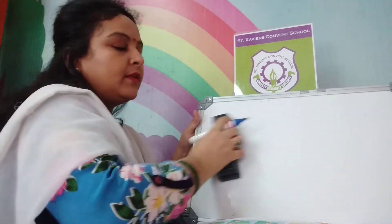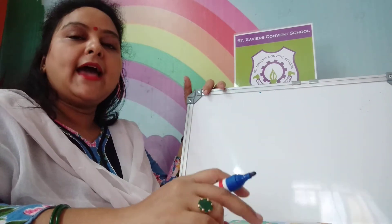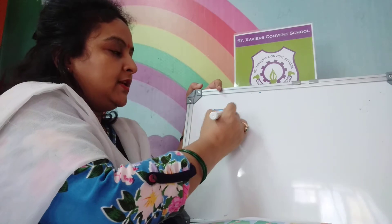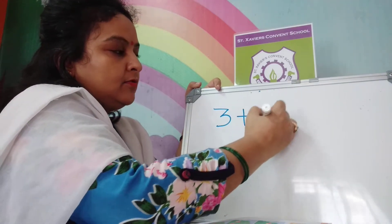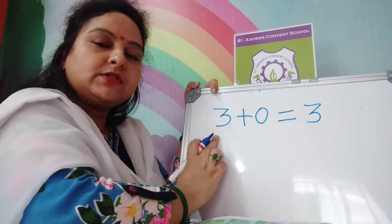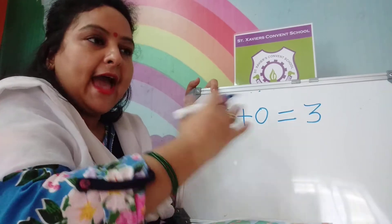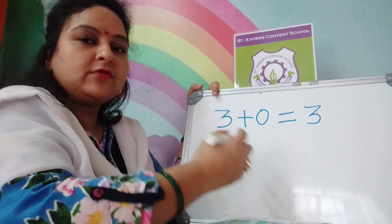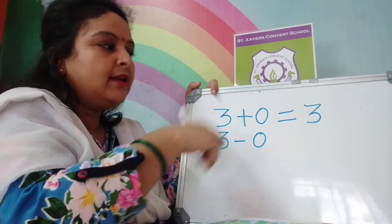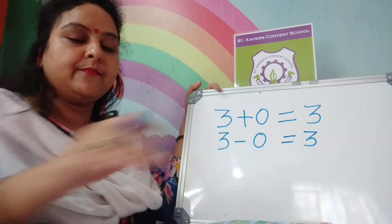When we add zero with any number, like three added with zero, the answer will remain the same — the answer will also be three. When we subtract zero from any number, if we subtract zero from three, we will get three. It will remain the same answer.